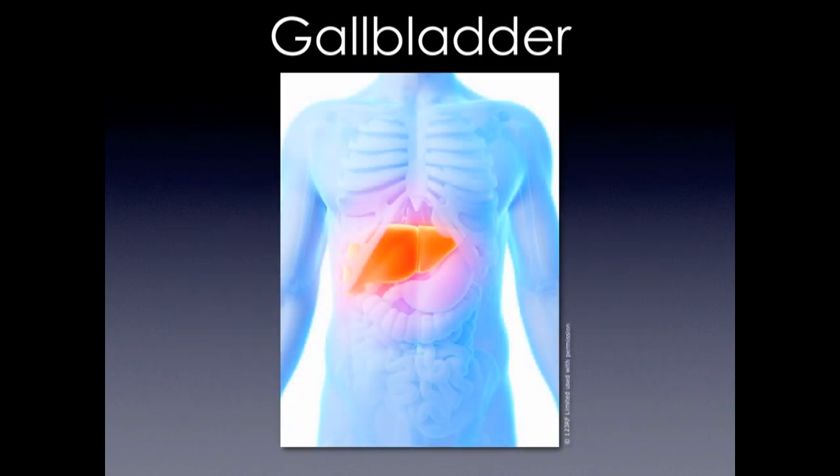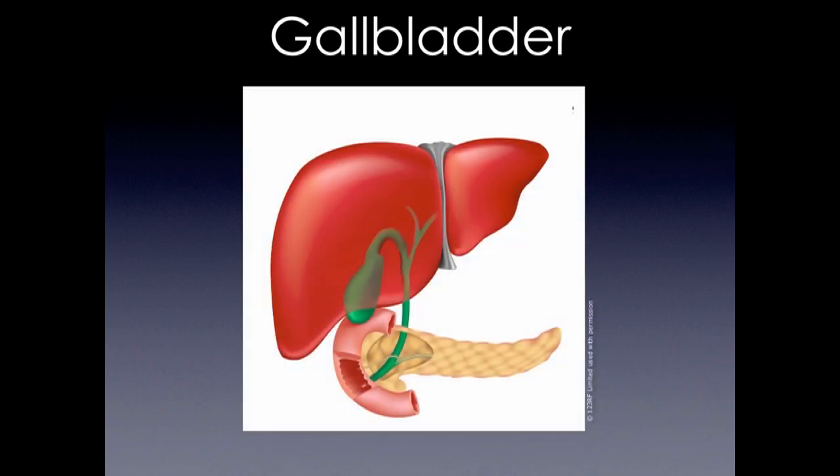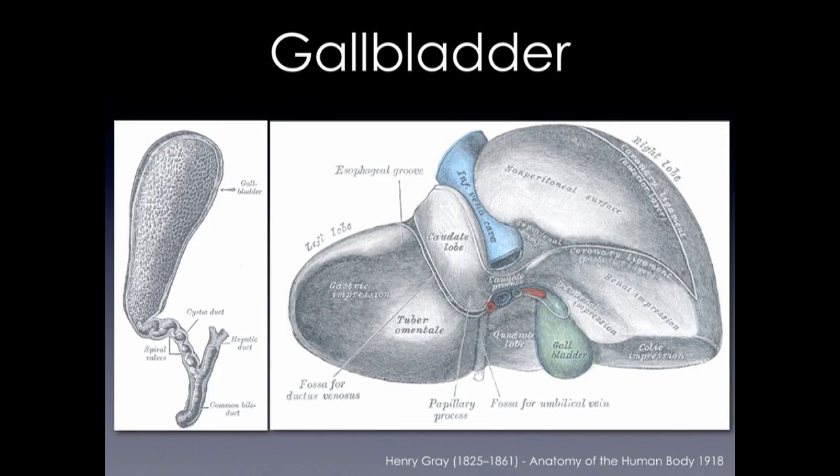Here we see a generalized view with the liver and the gallbladder. We have a closer image here. You see the gallbladder with the ducts draining into the duodenum along near the pancreatic duct. And then we have a classic from Grey's Anatomy where you see the posterior aspect and you see the gallbladder.